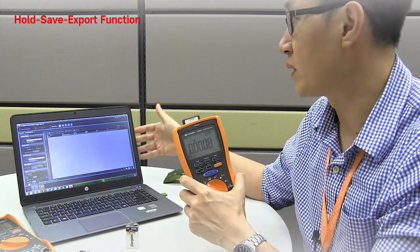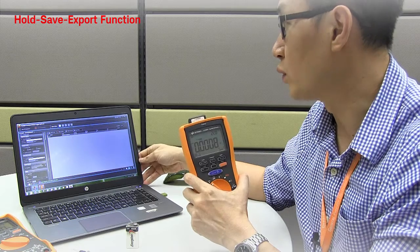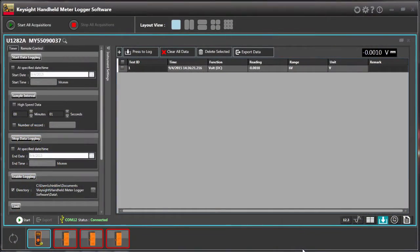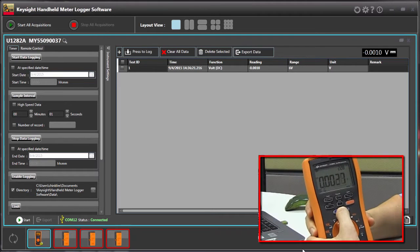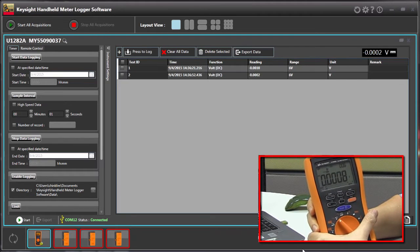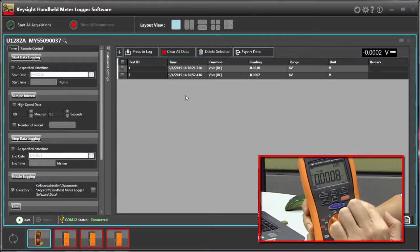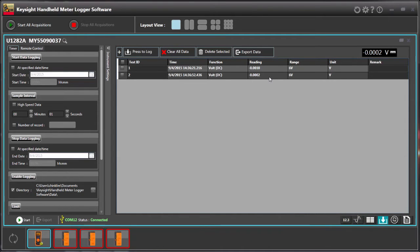So let's zoom into the screen and how it shows the readings. Now, every time that you press on the blue button, then you will add on a row of readings with the timestamps, functions, readings, and range and units.